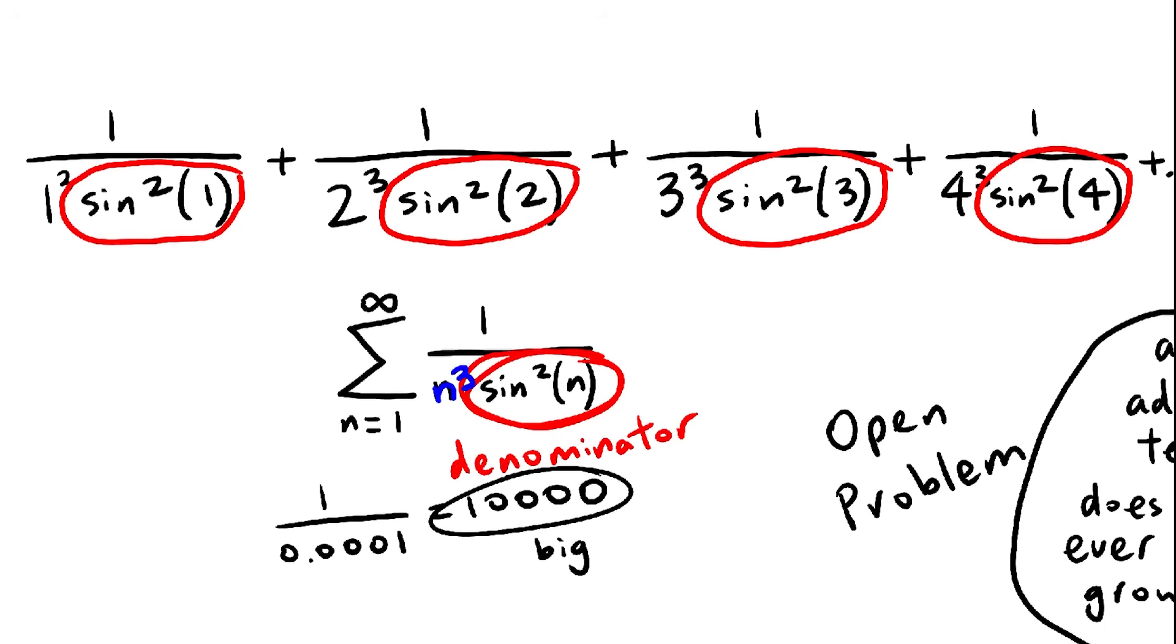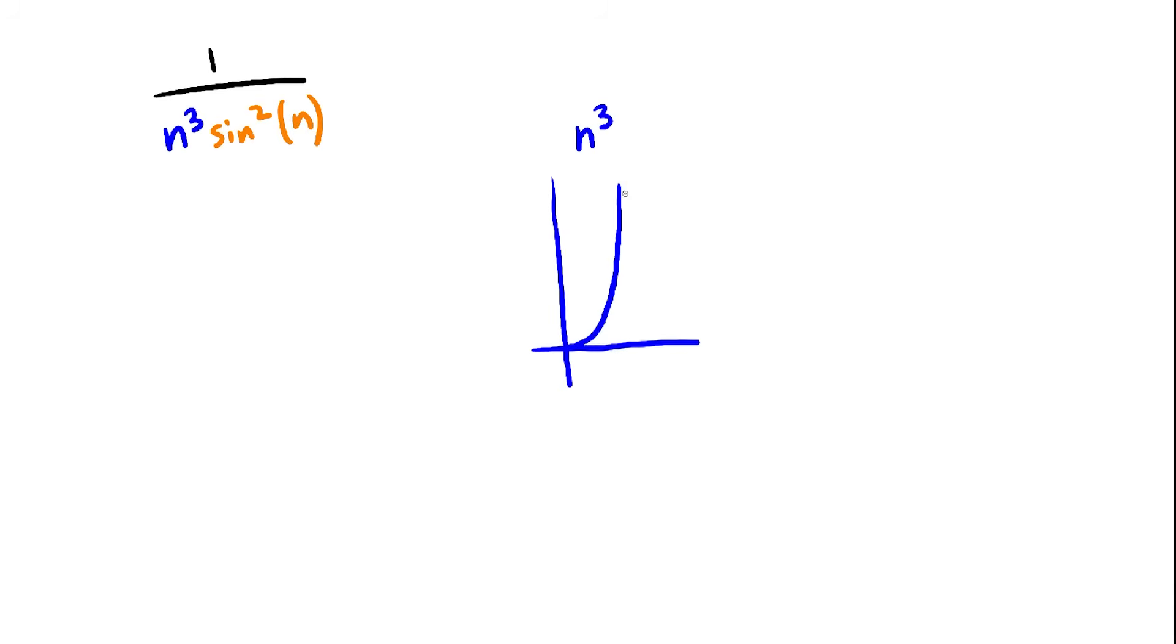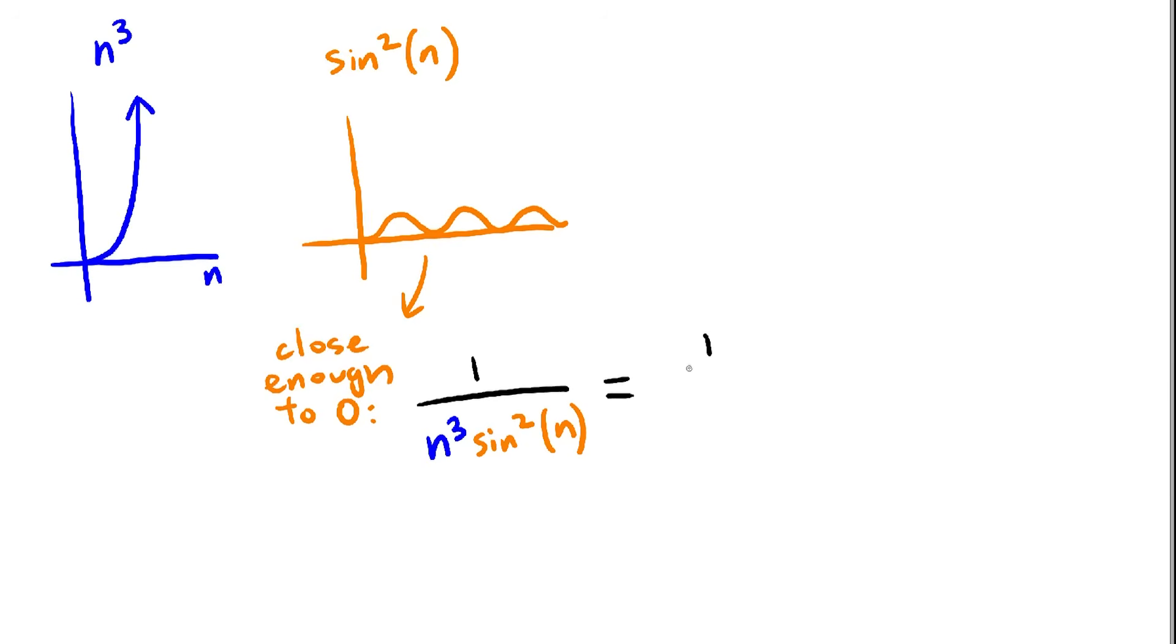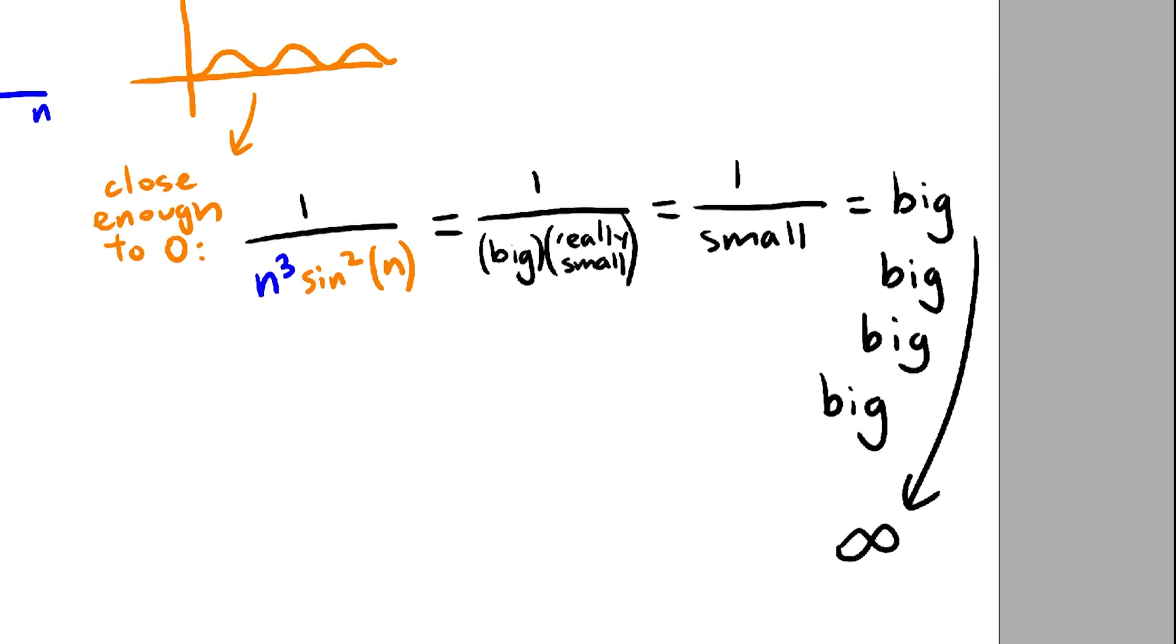So this infinite sum is essentially sine squared of n fighting against n cubed. n cubed gets really big quickly, but sine of n is more unpredictable, it randomly goes to 0. And if it gets close enough to 0 enough times, it'll win out against n cubed, and the series will diverge.